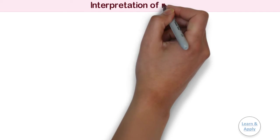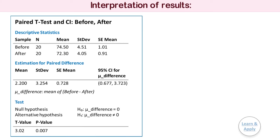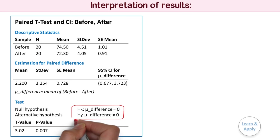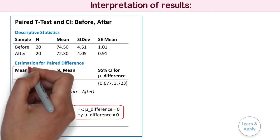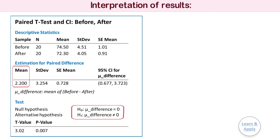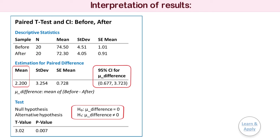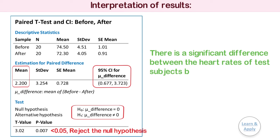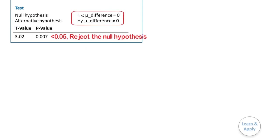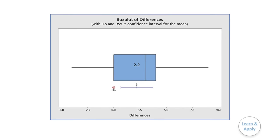Interpretation of results: In these results, the null hypothesis states that the mean differences of the pulse rate is 0, whereas the estimate for the paired difference in means of the resting heart rate is 2.2. We are also 95% confident that the paired difference in means is between 0.677 and 3.723. Because the p-value is 0.007, which is less than the significance level of 0.05, the physiologist rejects the null hypothesis and concludes that there is a significant difference between the heart rates of the test subjects before and after the running program. In the box plot for differences, we can also see this significant difference.